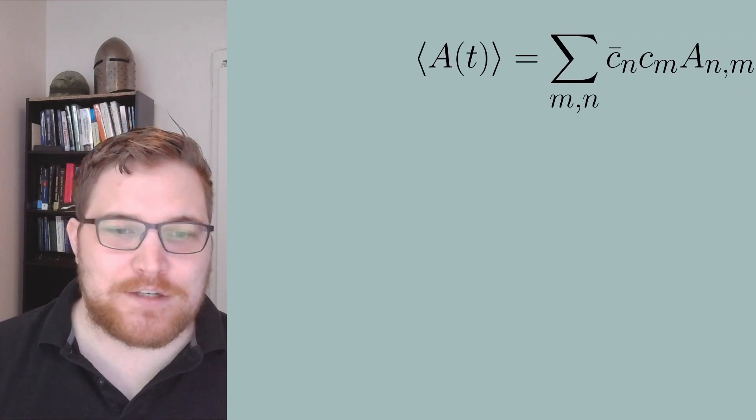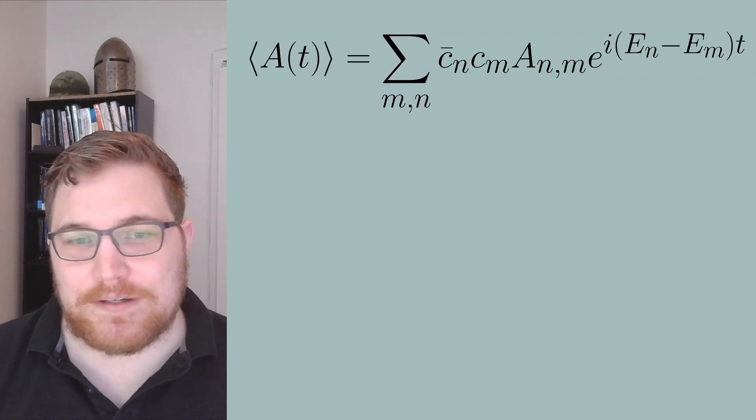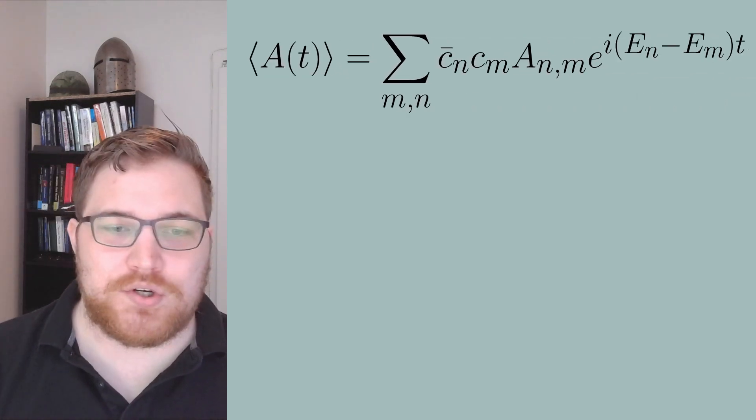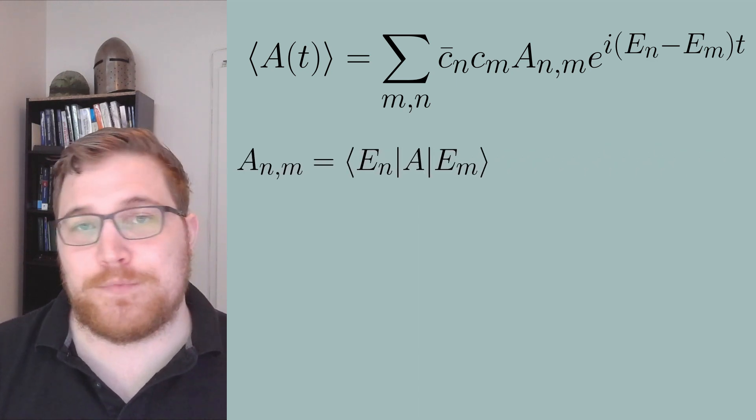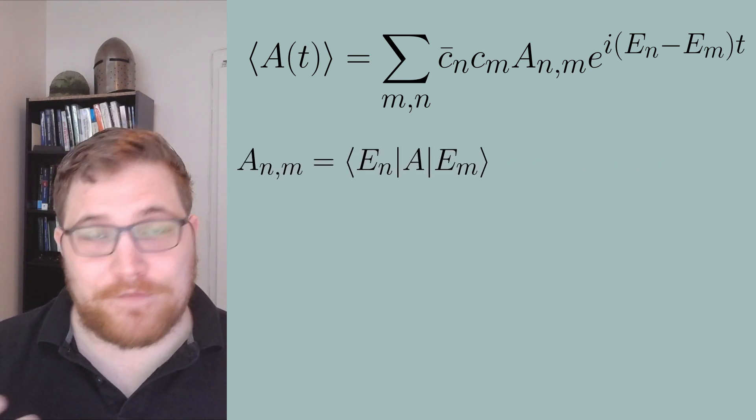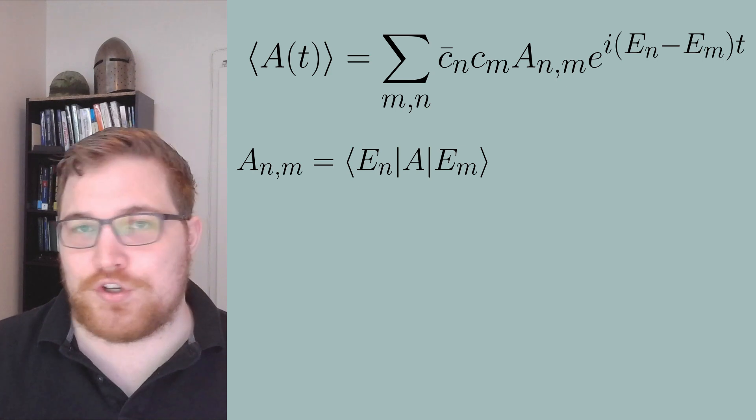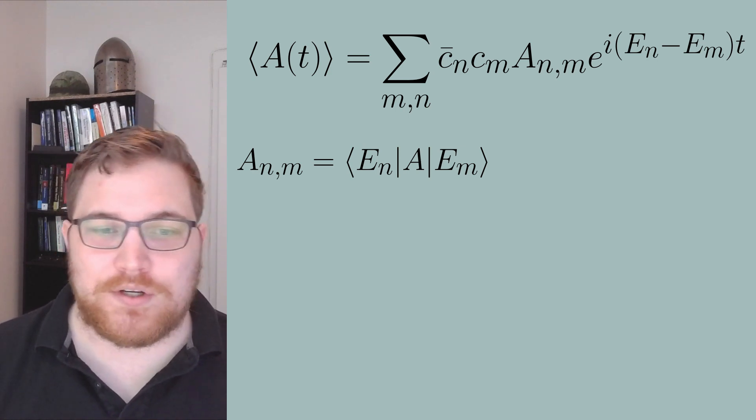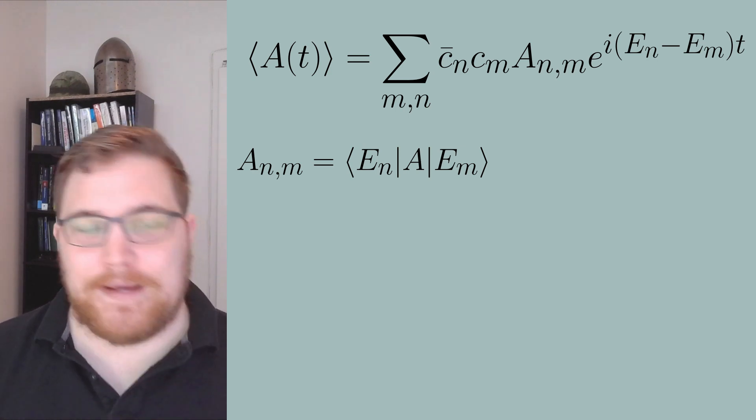So what I'll leave you with instead is some cool intuition about what equilibration in finite time actually looks like. So consider our expectation value of a in time and let's expand it out in the energy eigenbasis. So here we've made the notation choice to call the entries of the observable a as the following expression.